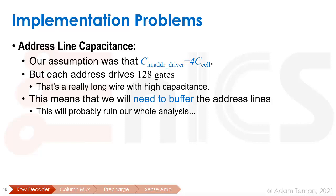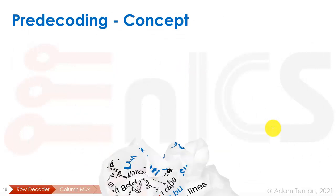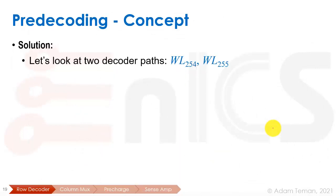Another problem is the bit cell pitch. Each signal drives one row of bit cells, so how do we fit eight address signals into the pitch of these very small, thin SRAM cells? We need to fit eight lines into a very tight pitch — that's going to be really tough. The solution to both problems is what we call pre-decoding.